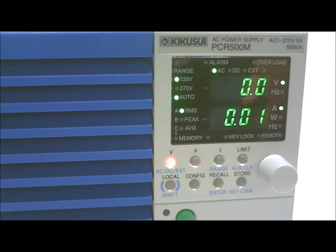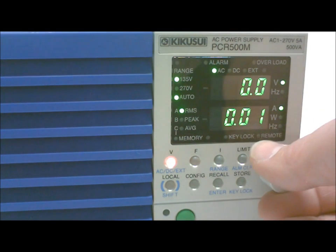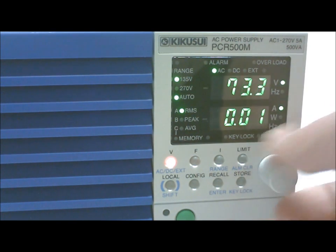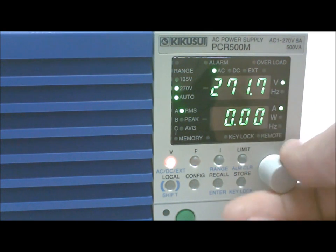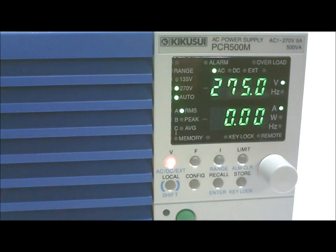The AC output voltage has very low harmonic distortion and is highly stable. It can be set between 1V and 270V. The frequency can be set between 40 and 500Hz.